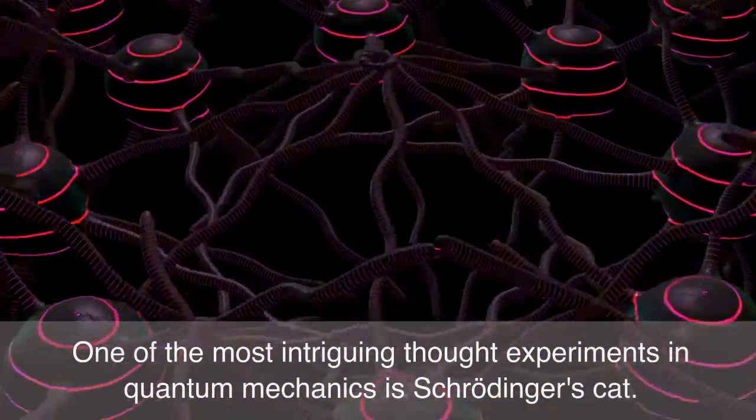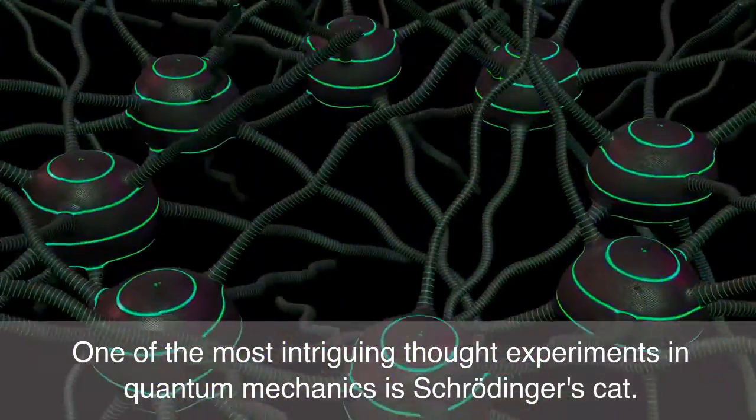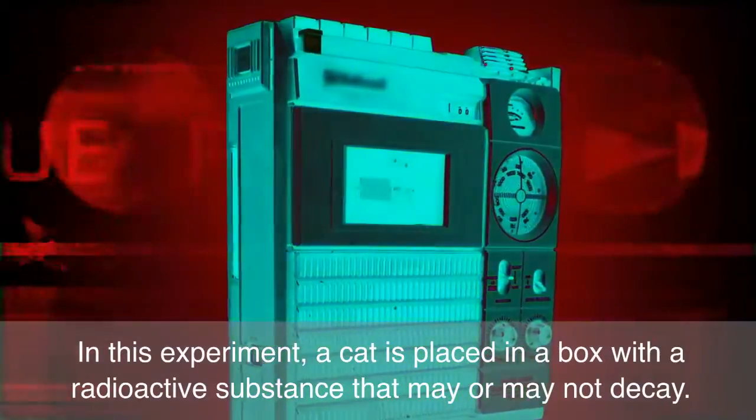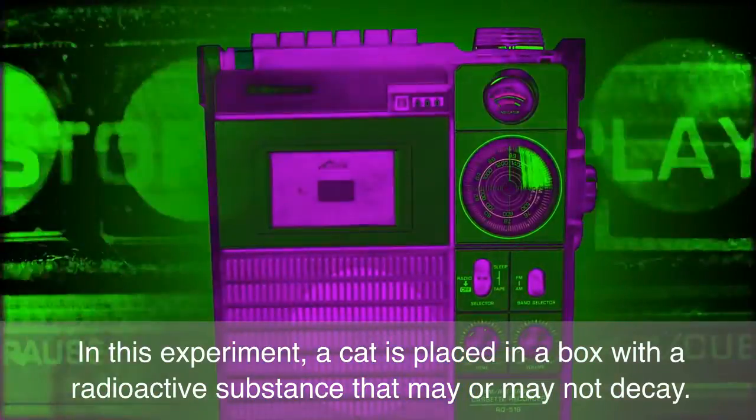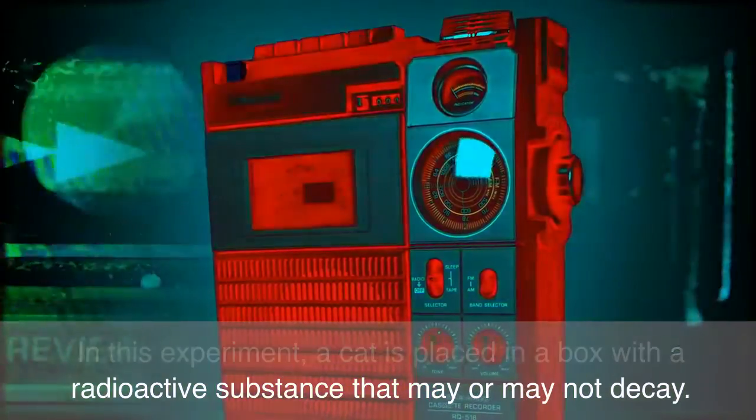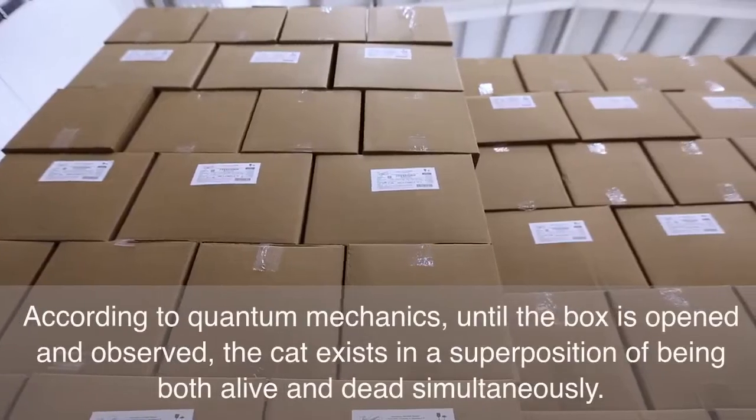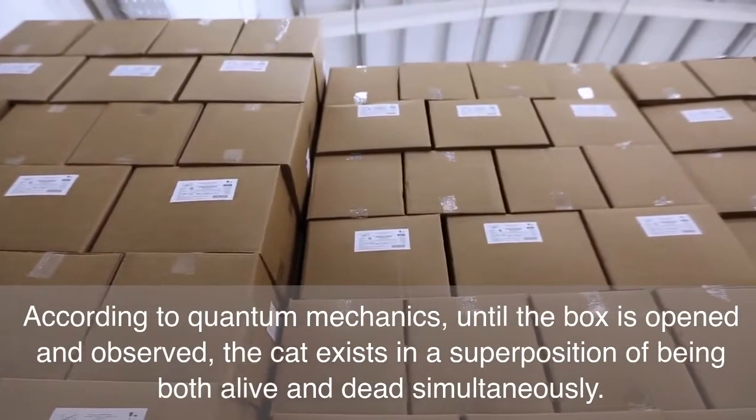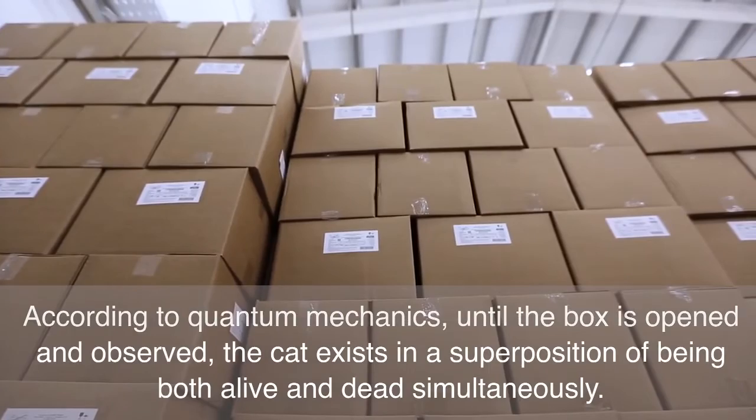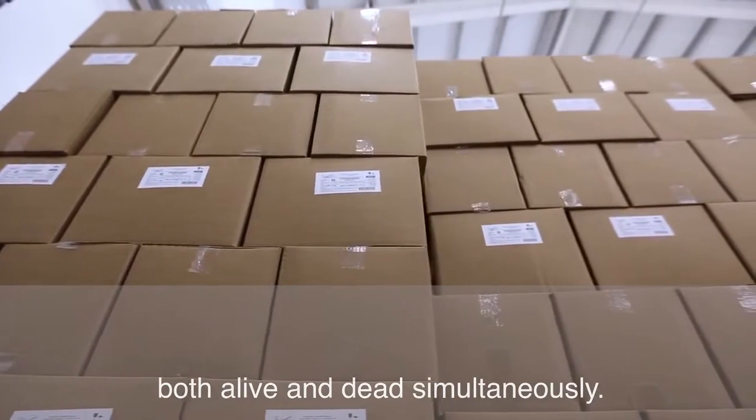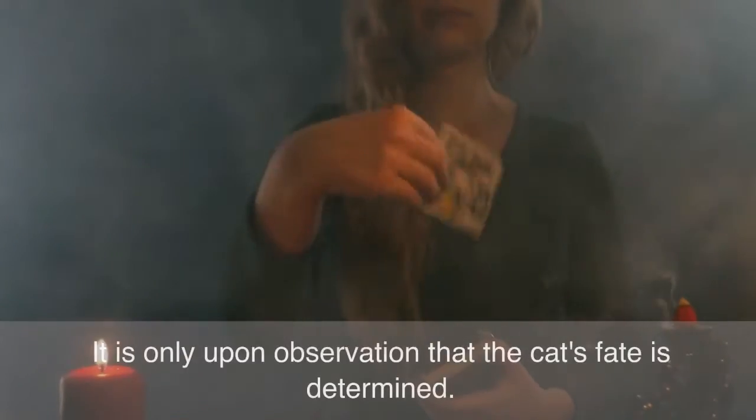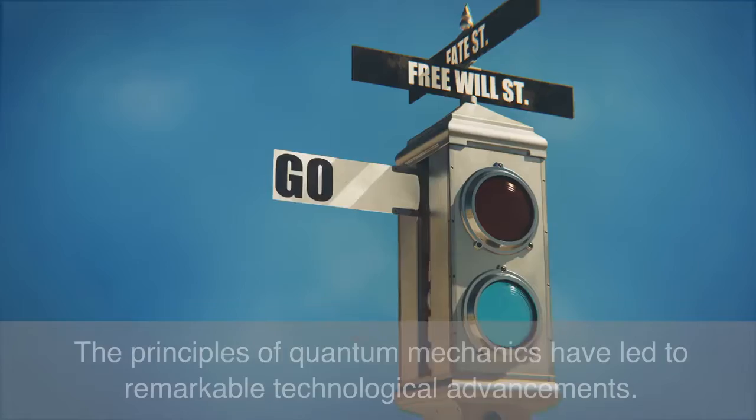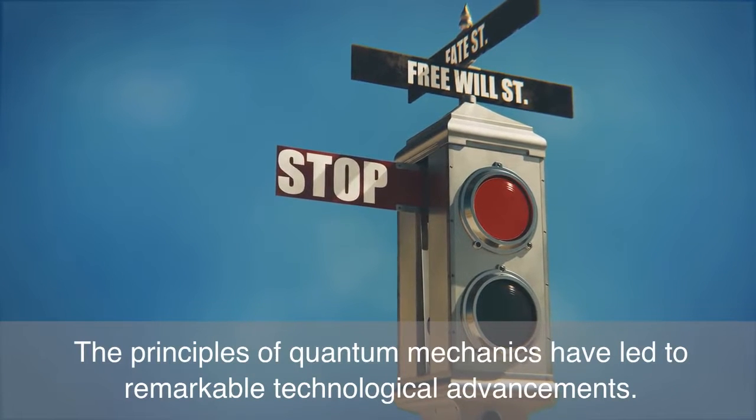One of the most intriguing thought experiments in quantum mechanics is Schrodinger's cat. In this experiment, a cat is placed in a box with a radioactive substance that may or may not decay. According to quantum mechanics, until the box is opened and observed, the cat exists in a superposition of being both alive and dead simultaneously. It is only upon observation that the cat's fate is determined.